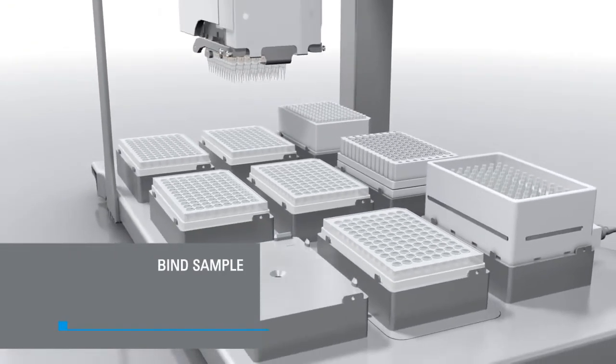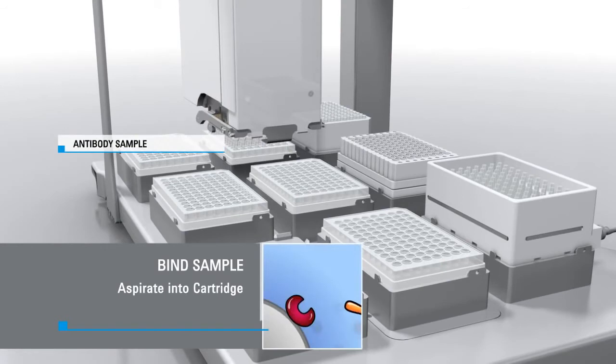Next, antibody sample is bound to the resin in the cartridge bed by aspirating into the cartridges from the antibody sample plate.